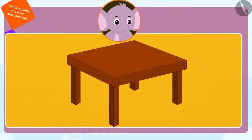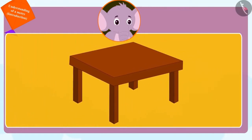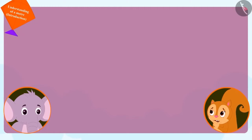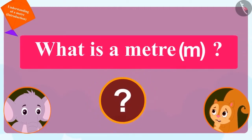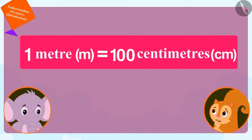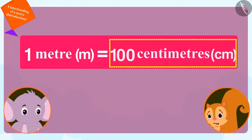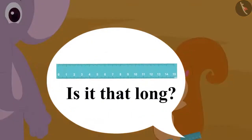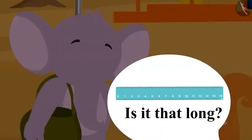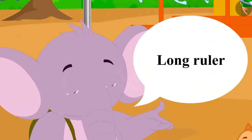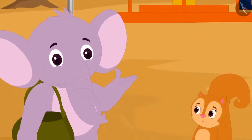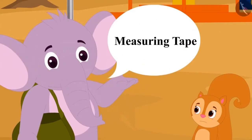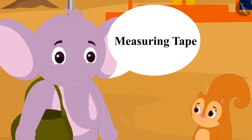But to measure the length of large objects, she has to use a meter. Chanda immediately asked Appu what a meter is. Appu explained to her that one meter is equal to one hundred centimeters. Chanda was shocked and asked if it was possible to make such a long ruler. Appu said yes, there is a long ruler to measure in meters, but we can more easily measure length in meters using a measuring tape.